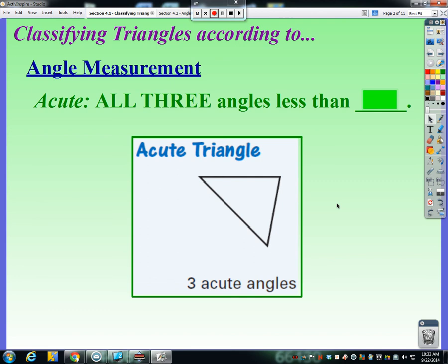If we want to classify triangles by their angle measurement, we have used the term acute before to describe one specific angle that is less than 90 degrees. There is such thing as an acute triangle, and the definition is where all three of our angles are less than 90 degrees. You don't just have one or two acute angles, but all three angles of the triangle must be acute. If you have three acute angles, you have an acute triangle.